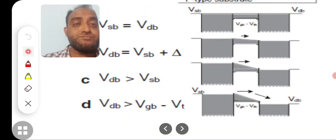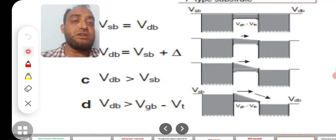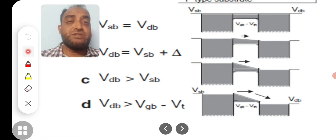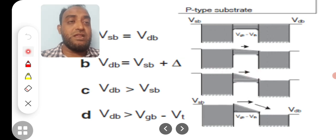Now in the second case, Vdb is greater than Vsb. The level is raised further away, further more than the channel. Now the flow of current will be larger compared to the previous case. In this case, large current is moving because there is a large difference between these two potential levels.